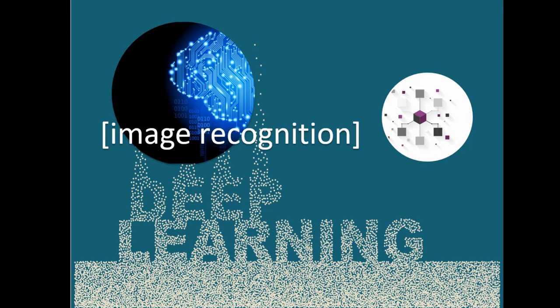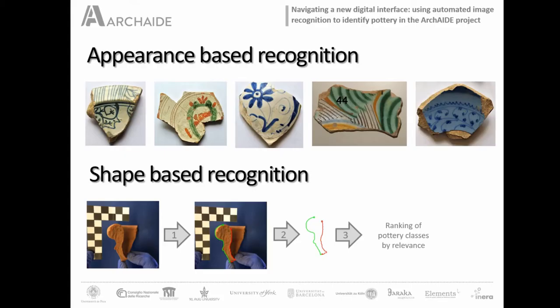The core of the system is based on artificial intelligence — the development of two different neural networks. One works with appearance-based recognition to allow identification of decoration on the surface of the pottery, and another neural network allows shape-based recognition by extracting the profile of the pottery. All this is done with just one image.